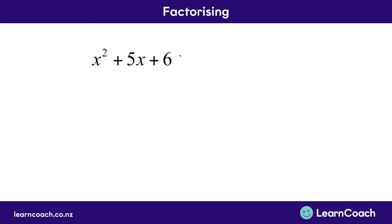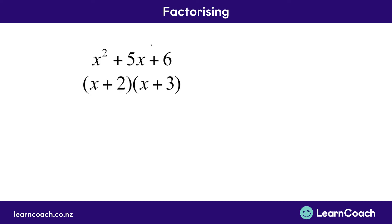In order to factorize — that means to put it into brackets — we had to find two numbers which multiplied to make the end number and added together to make the middle number, the positive 5. In this case, the two numbers are positive 2 and positive 3. They multiply to make positive 6 and add to make positive 5. Then we put both numbers in brackets with an x.